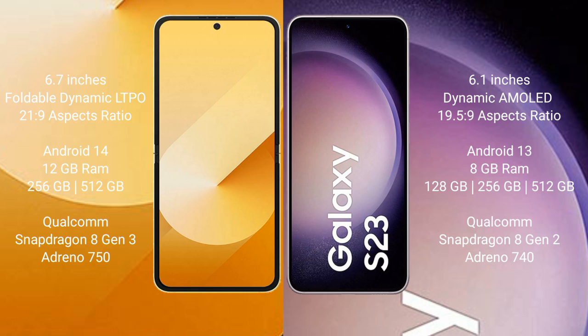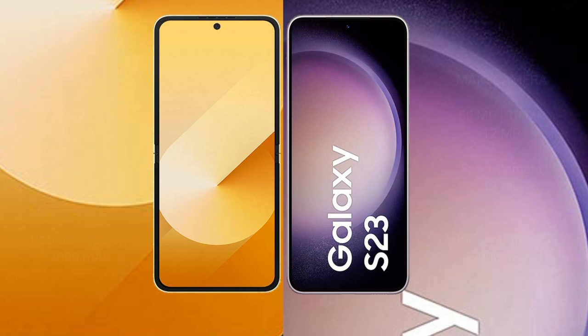Samsung Galaxy Z Flip 6 comes with 12GB RAM and 256GB or 512GB internal storage, with a Qualcomm Snapdragon processor. Samsung Galaxy S23 comes with 8GB RAM and 128GB, 256GB, or 512GB internal storage, also with a Qualcomm Snapdragon processor.